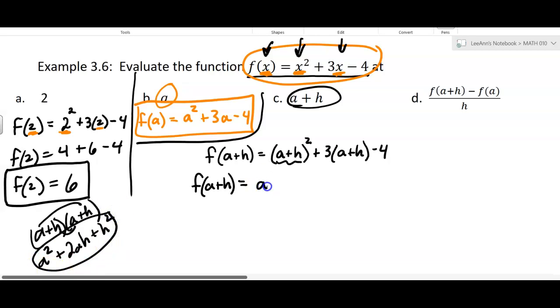I'm going to write that in. A squared plus 2AH plus H squared plus, then you've got this distributing, 3A plus 3H minus 4. I'm running out of room. Now, there aren't any like terms to combine, so this is it, right there.